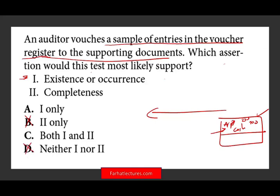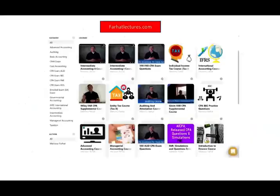Now, does this test also serve completeness? The answer is no. Completeness is the opposite — you look at the documents and go forward to make sure they made it all the way to the journal entry. So you need to know the difference between existence/occurrence and completeness. Therefore the answer is A. To learn all of this in detail, you can check out my auditing course on my website, farhatlectures.com, where I have plenty of explanation about these topics, including the CPA auditing and attestation section.